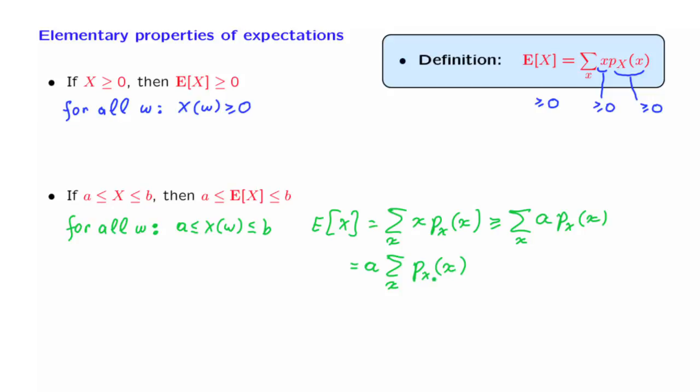Why is that the case? Well, these are the probabilities for the different numerical values of the random variable. The sum of the probabilities of all the possible numerical values has to be equal to 1, because that exhausts all the possibilities. So we obtain a times 1, which is a. So what we have proved is that the expected value is at least as large as a.